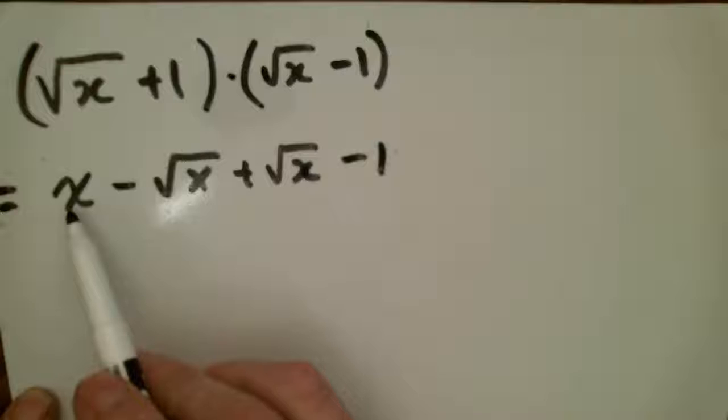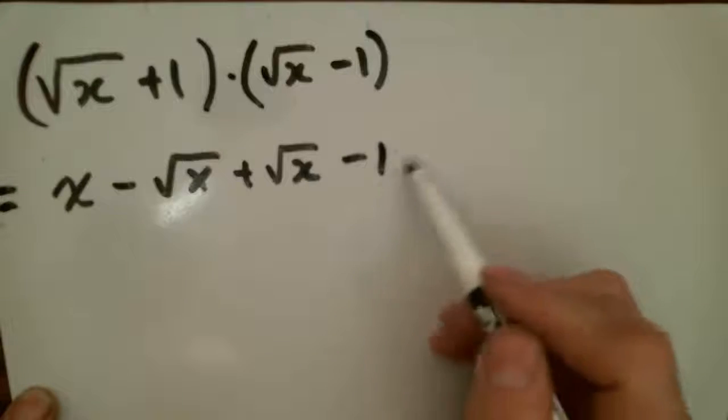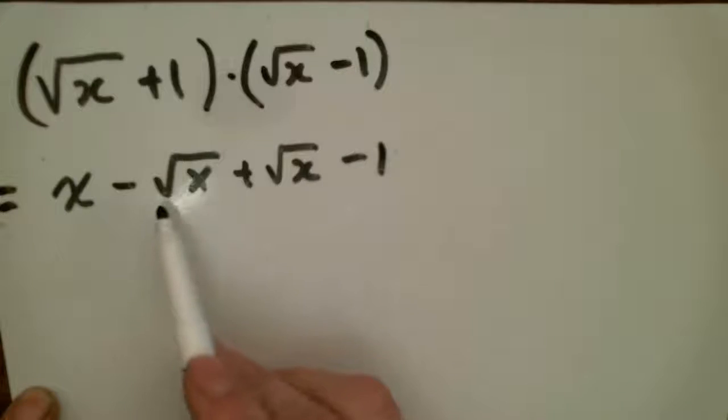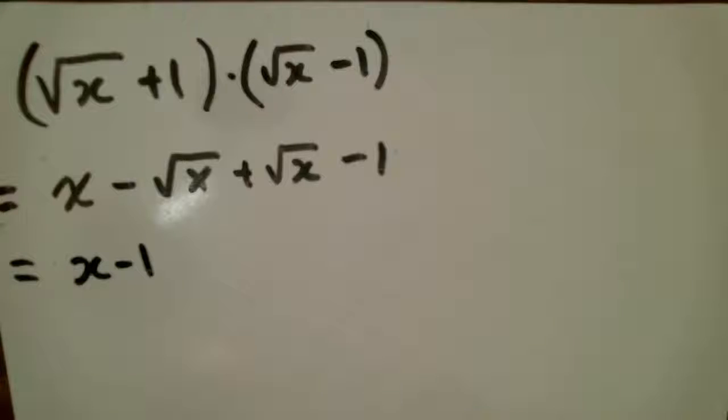I eliminate the radical on the first term, it doesn't exist on the last term, and I get rid of it in the middle. And so I end up with x minus 1 by multiplying it by the conjugate. It eliminates radicals.